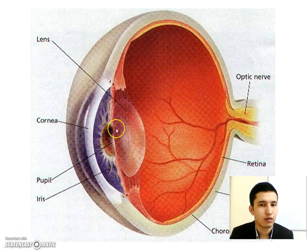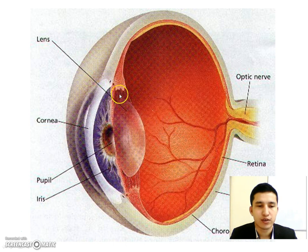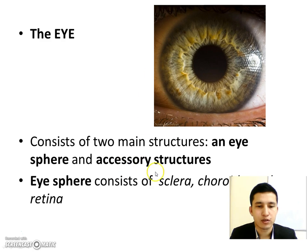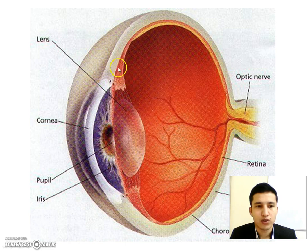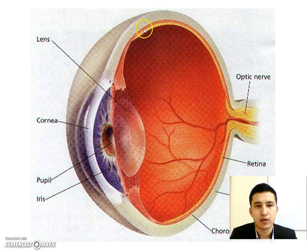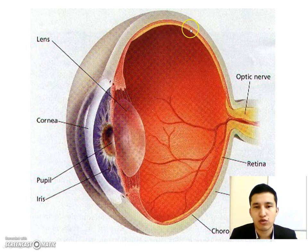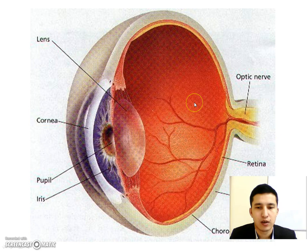The eye sphere has three layers: the sclera, choroid, and retina. The white part is the sclera. The red part is the choroid, which contains a lot of blood capillaries. The yellow layer is the retina, which contains many photoreceptors for eye vision.